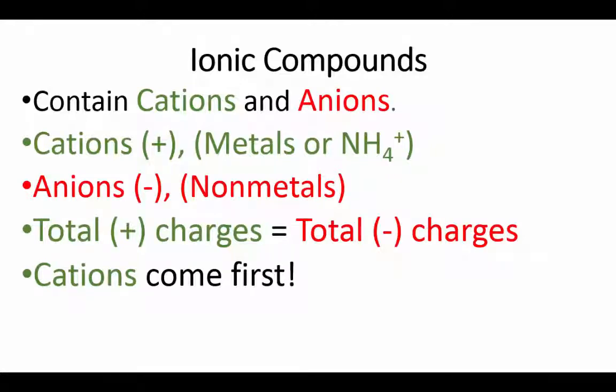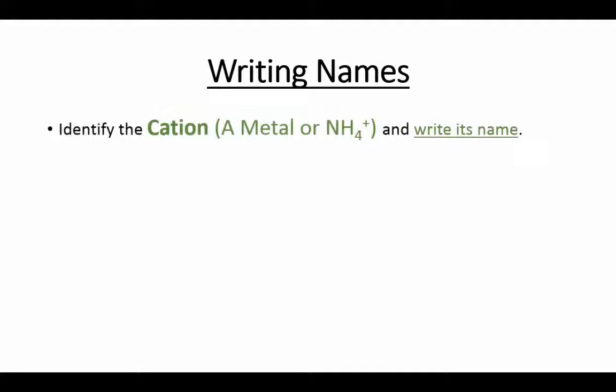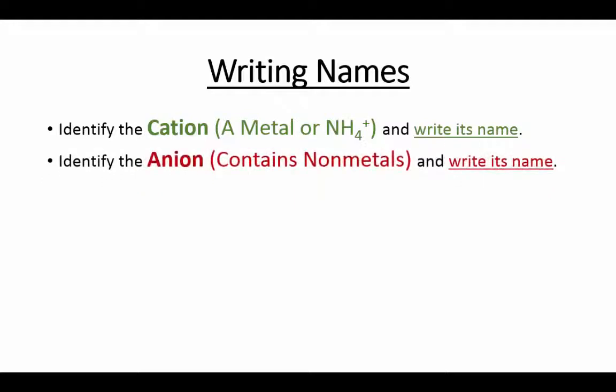Let's start with writing names of ionic compounds—it's a pretty straightforward process. First, identify the cation, and that's going to be a metal or ammonium, and write its name. Then identify the anion, which contains non-metals, and write its name. So each compound has two ions, each will have two names.